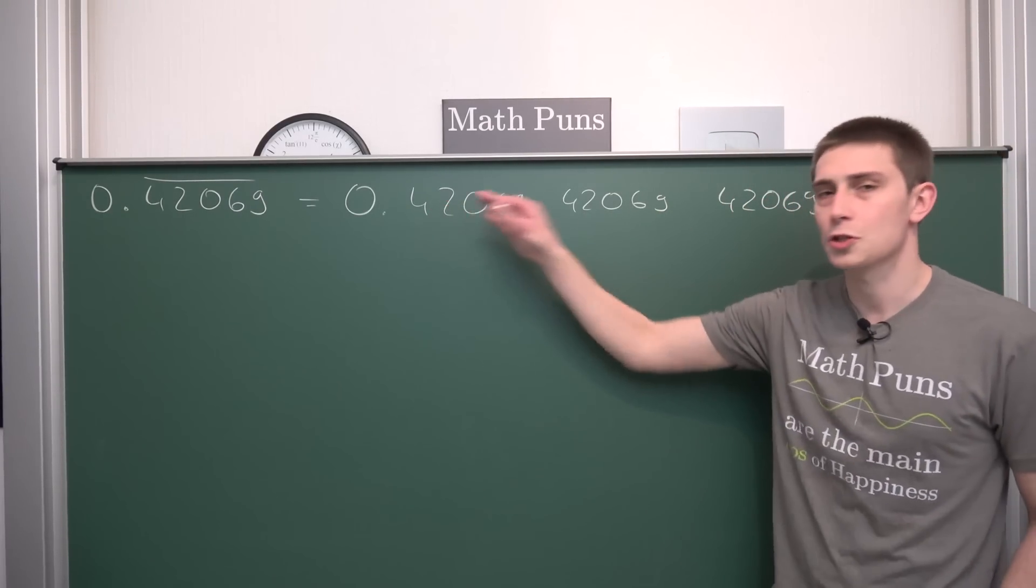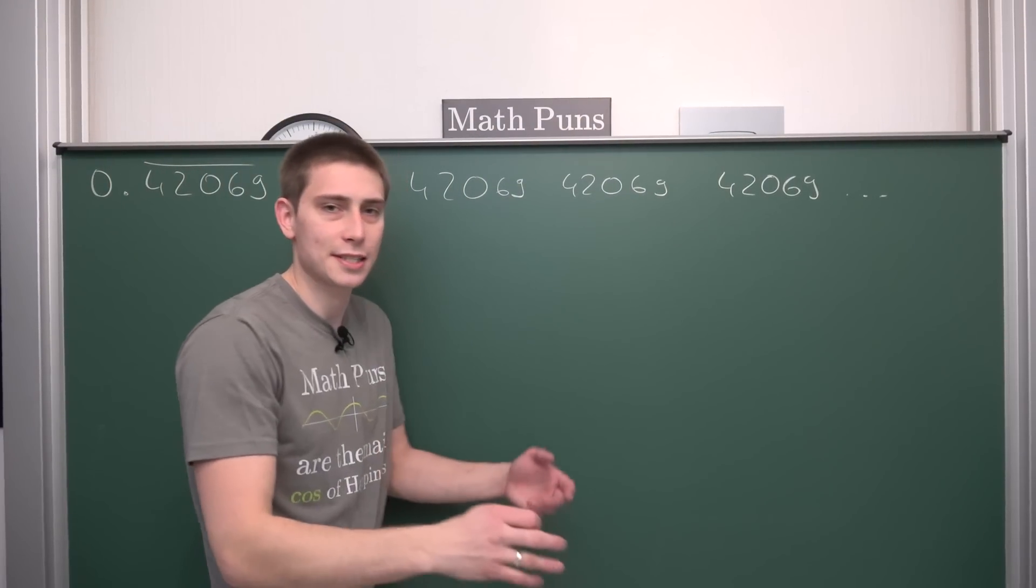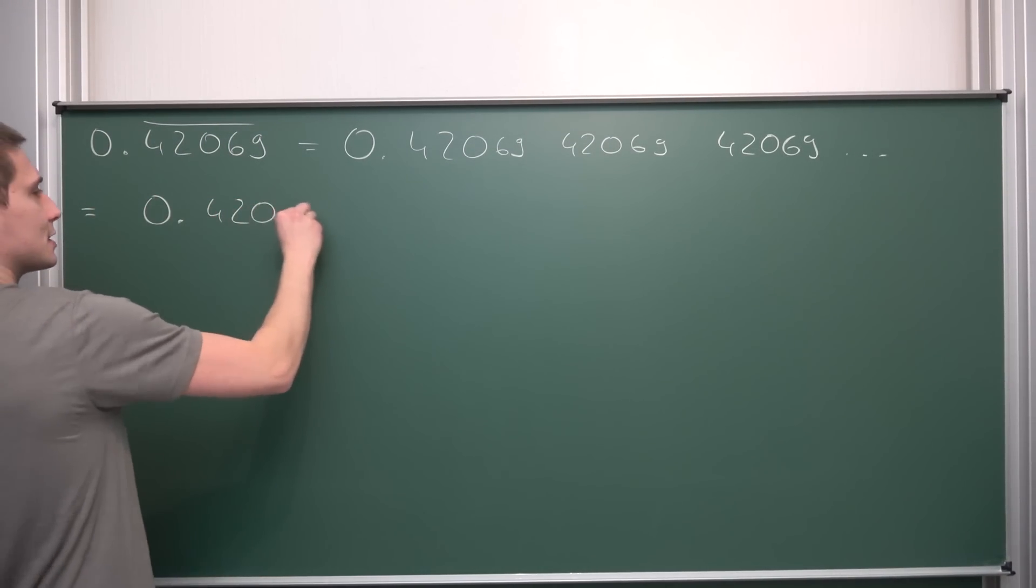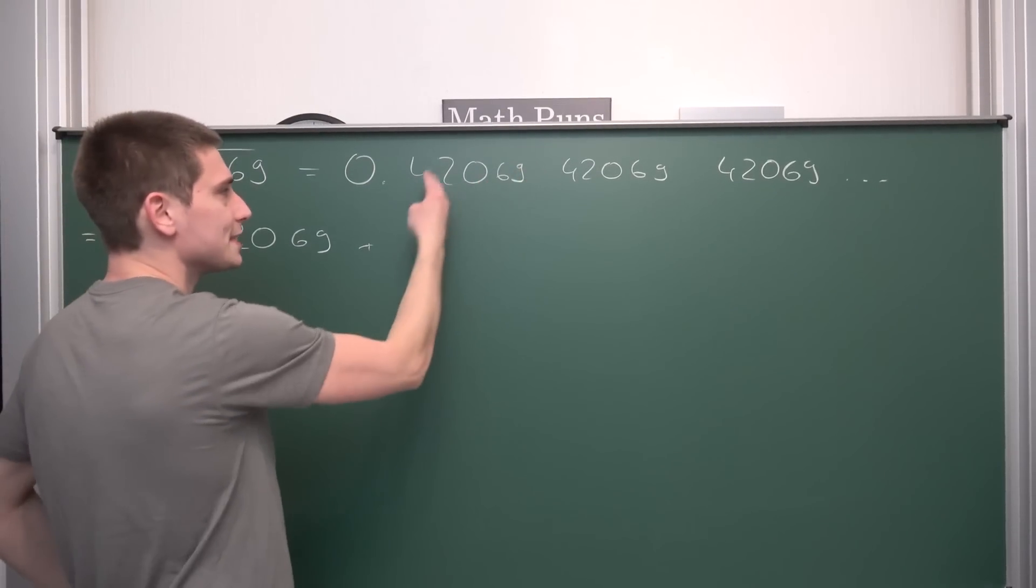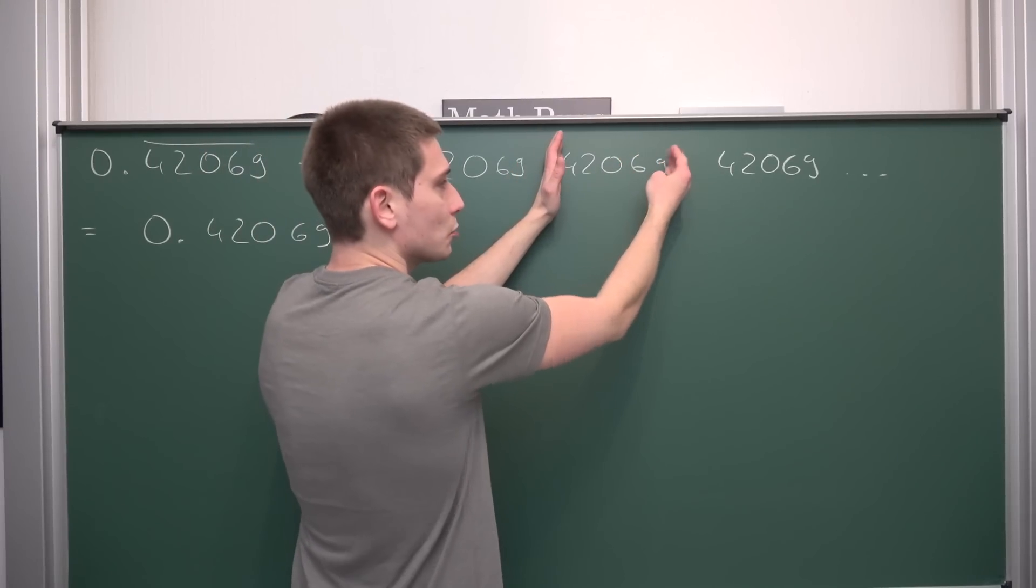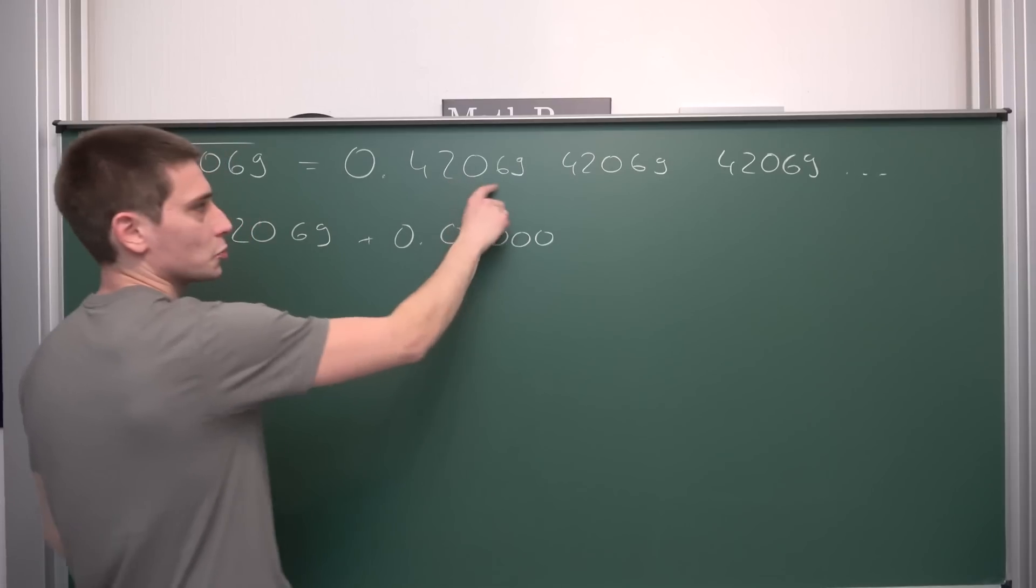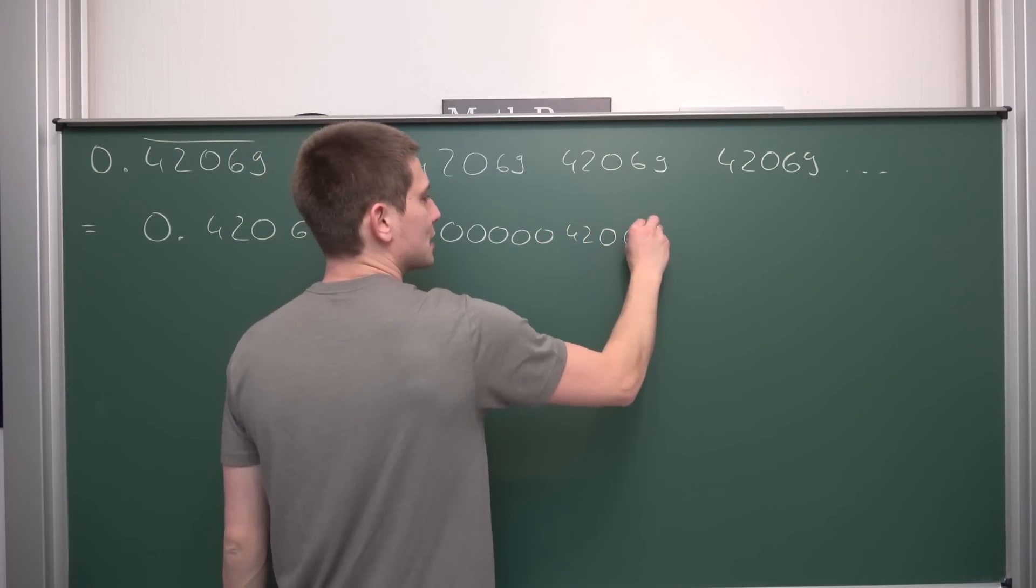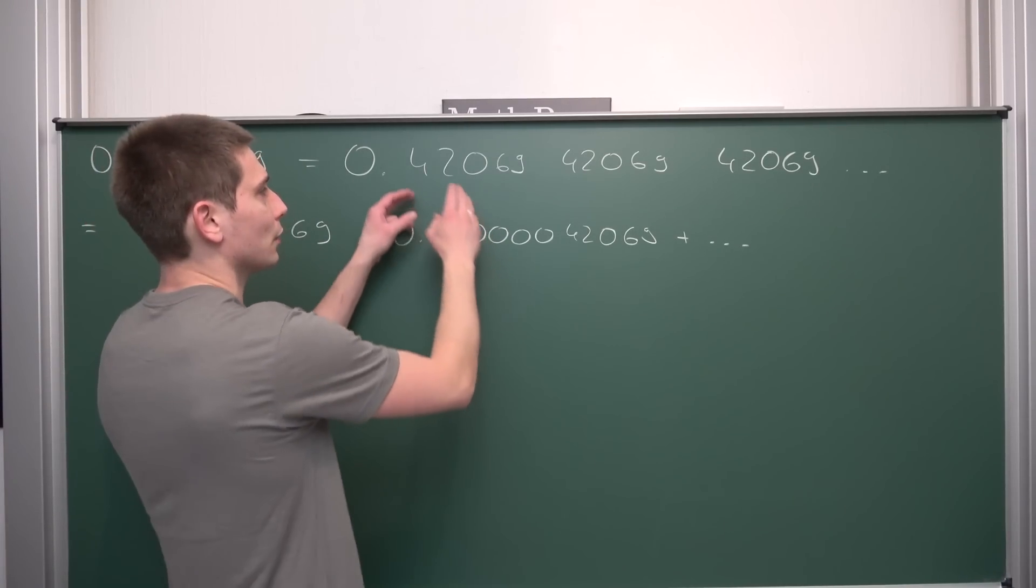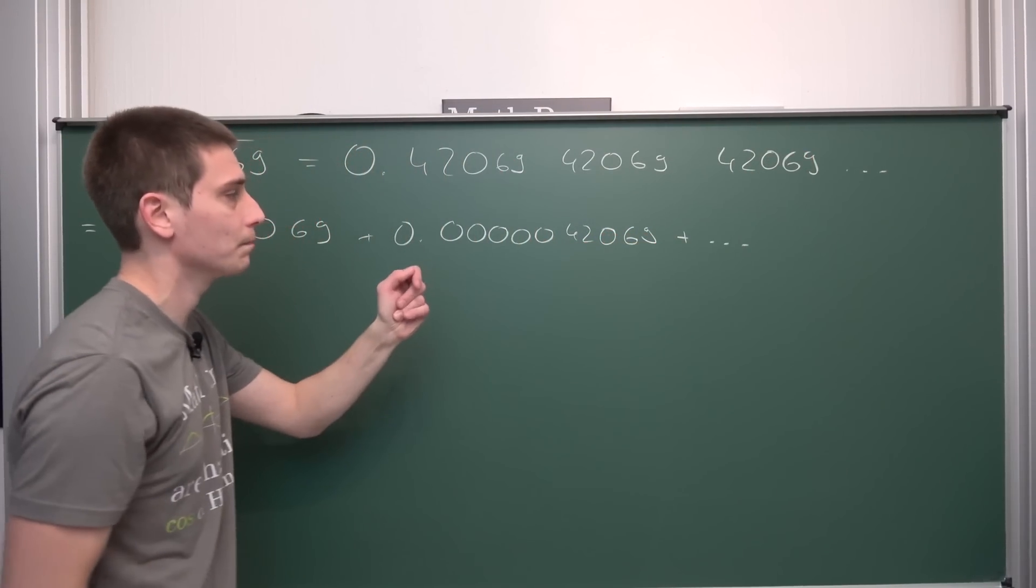Now what I would like to do is split this up a little bit. What this is, is just the addition of a few decimal numbers. In other words, this is 0.42069, and then plus 0 with five decimal places and then 42069, plus and so on. Next up would have been 0 with 10 zeros, and then 42069, and so on.